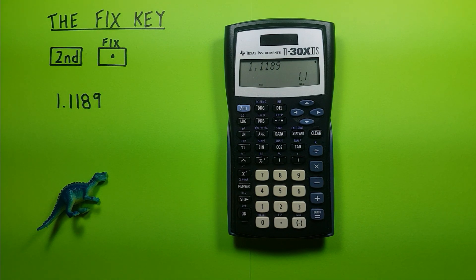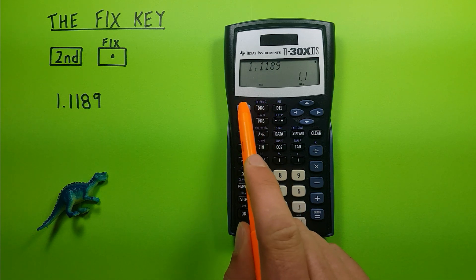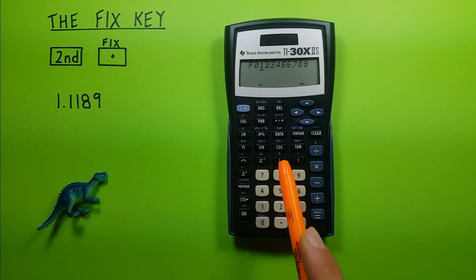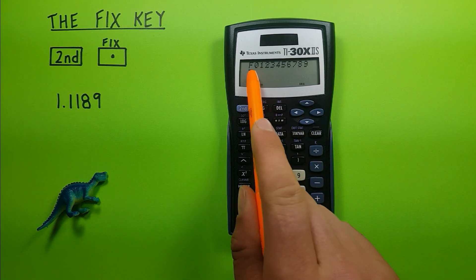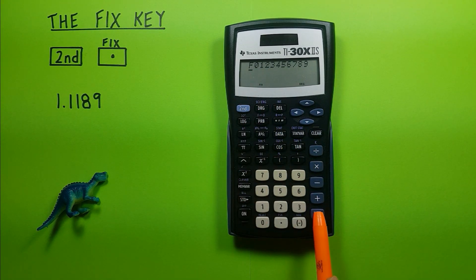And if we want to return to our normal mode or our full decimals, you go second function fix, move back over to the F, highlight that, hit enter, and you can see we're back viewing all of our decimals.